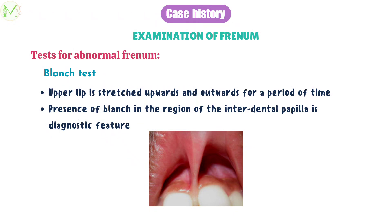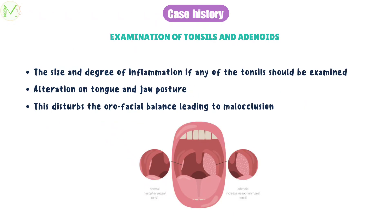We can do some tests to identify abnormal frenal attachment, such as the blanch test and tension test. In the blanch test, the upper lip is stretched upwards and outwards for some period of time. Presence of blanching in the region of the interdental papilla is diagnostic of high frenal attachment. Moving on to examination of tonsils and adenoids. The size and degree of inflammation of the tonsils should be examined. Abnormally inflamed tonsils can cause alteration in tongue and jaw posture, thereby upsetting the orofacial balance, which in turn leads to malocclusion.